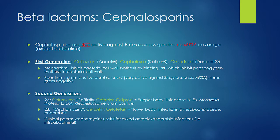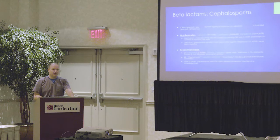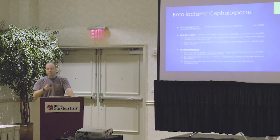Second-generation cephalosporins: cefuroxime is 2a — upper body; cefoxitin or cefamycins are 2b — lower body. We separate 2a from 2b because cefoxitin and the cefamycins have anaerobic coverage. For example, a 16-year-old with appendicitis going to the OR — cefoxitin would be your drug of choice for pre-op antibiotic prophylaxis.